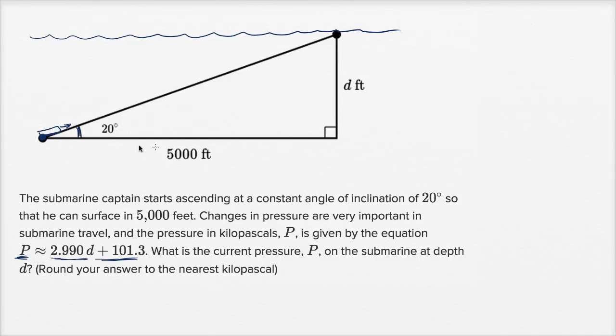All right, so if we can figure out—they've kind of drawn a nice right triangle for us where this angle right over here is 20 degrees. If we can use a little bit of mathematics to figure out what D is, then we can substitute D into this formula right over here and figure out the pressure in kilopascals at this starting depth.